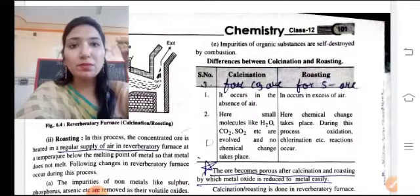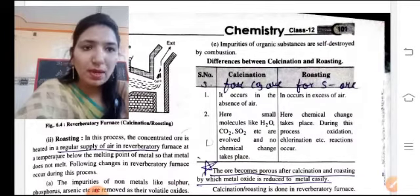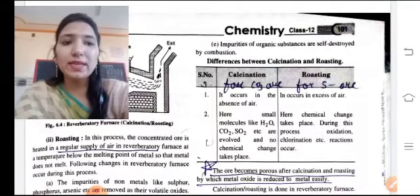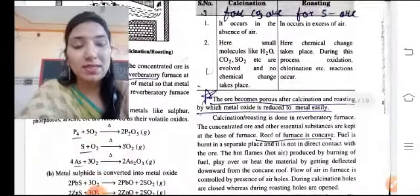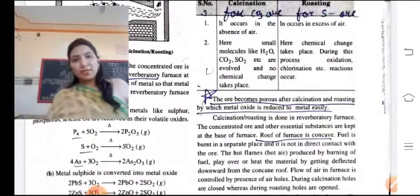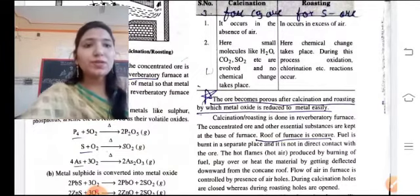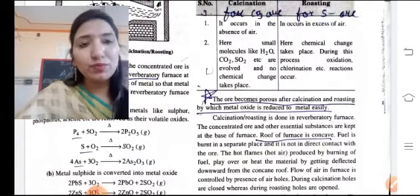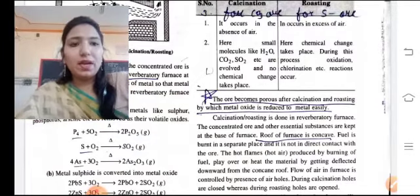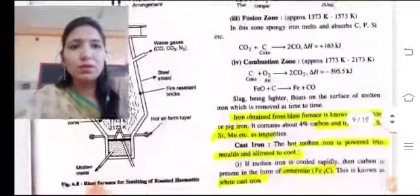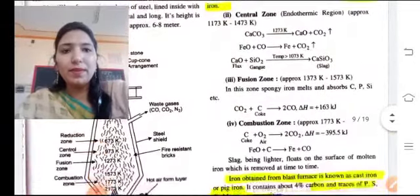The ore becomes porous after calcination and roasting — you can see small pores. Because of this porous structure, the metal oxide can be reduced to metal more easily. That is why we can extract the metal from this process. Calcination and roasting are carried out in a reverberatory furnace, where the concentrated ore and essential substances are kept at the base.